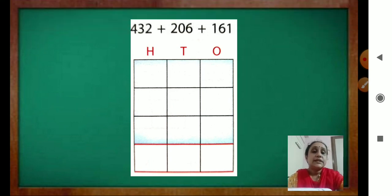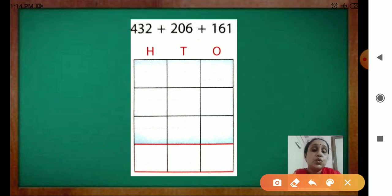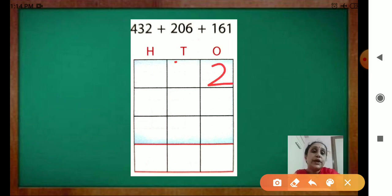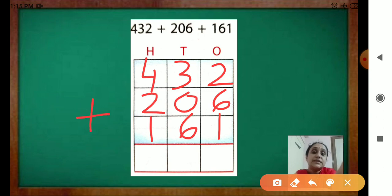Now the next one. See, the numbers are given. Again, you have to put them in the correct place. I have taught you how to write the numbers in the correct place. So 432 plus 206 plus 161. Write the numbers in their correct places. So 432: put 2 in the 1s place, 3 in the 10s place, 4 in the 100s place. Then 206: 6 in 1s, 0 in 10s, 2 in 100s. Plus 161: 1 in 1s, 6 in 10s, 1 in 100s. What sign? Plus sign you have to put.